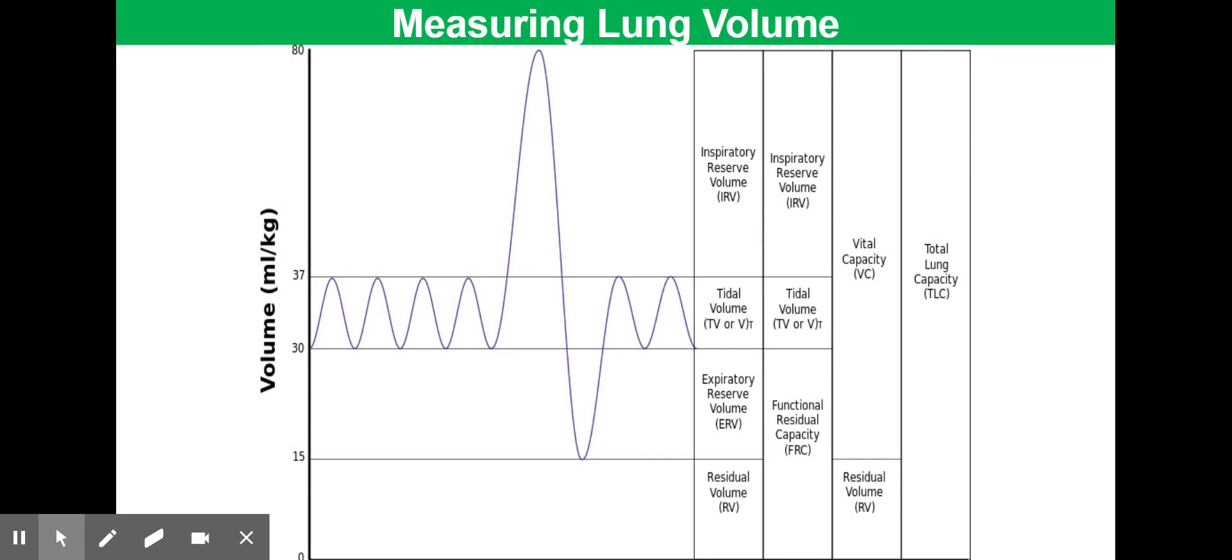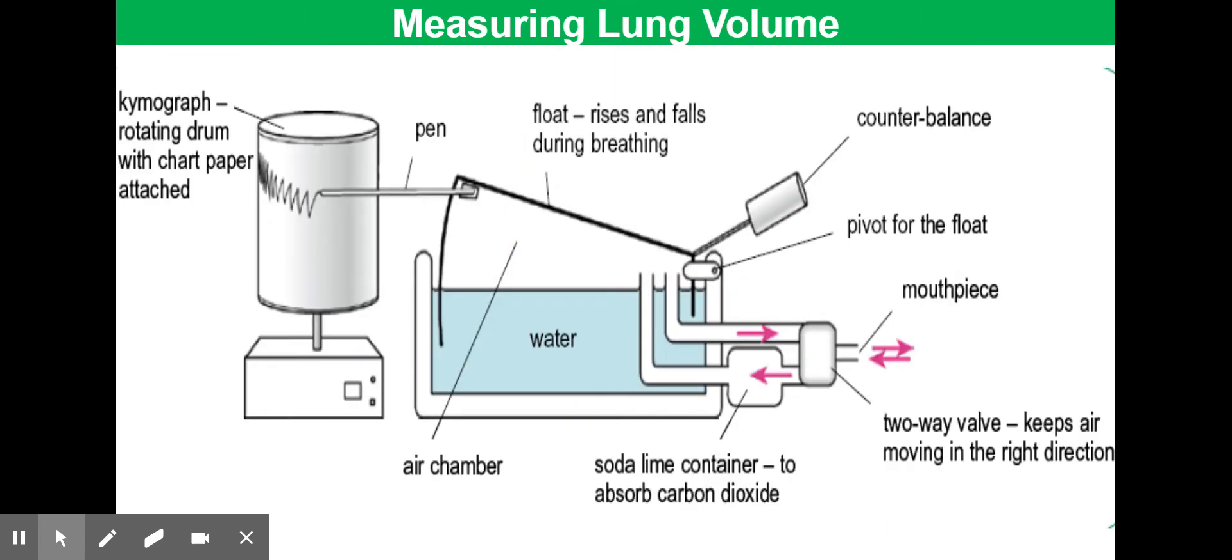During breathing, it's all about supplying oxygen to your cells for respiration and removing carbon dioxide from your cells as a result of respiration. As a person breathes from the spirometer, oxygen is absorbed by the body and replaced by carbon dioxide. The carbon dioxide is then absorbed by the sodalime in that sodalime container, so the volume of the air in the chamber decreases.